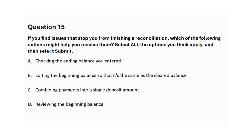Exam question: If you find issues that stop you from finishing a reconciliation, which of the following actions might help you resolve them? Select all the options you think apply. A: Checking the ending balance you entered. B: Editing the beginning balance so that it's the same as the cleared balance. C: Combining payments into a single deposit amount. D: Reviewing the beginning balance. The correct answer is C: combining payments into a single deposit amount.